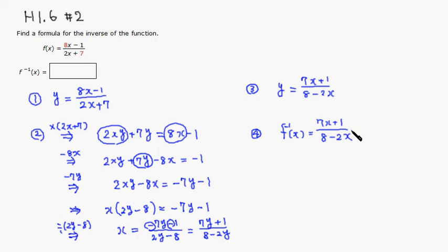That's the inverse function. So you can put 7x plus 1 all over 8 minus 2x. Alright, that's it. I hope that this was clear.